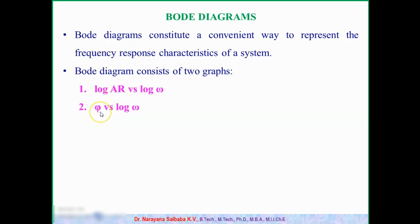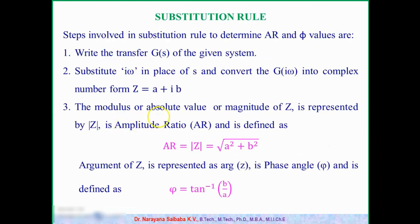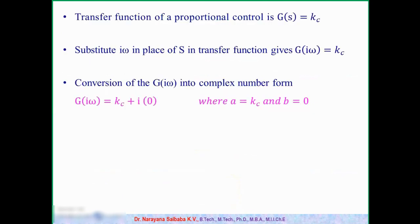If we know the formulas for the given system we can directly substitute omega values; otherwise we have to generate the AR and phi formulas using the substitution method. The substitution method involves three simple steps. First, write the transfer function of the given system. Second, replace the s term with iω and write it in complex number form z = a + ib. Then, the amplitude ratio AR = √(a² + b²) and φ = tan⁻¹(b/a), where a is the real part and b is the imaginary part.